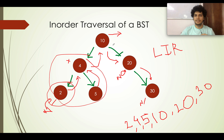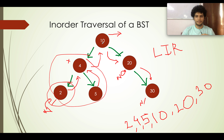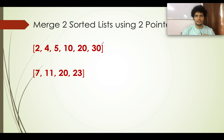The time complexity for this traversal is O(n), where n is the number of elements in the BST, because you are traversing every element exactly once. The easiest approach to implement this traversal is recursion, which we will cover during the coding part.